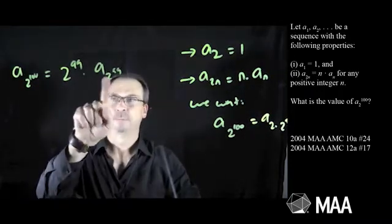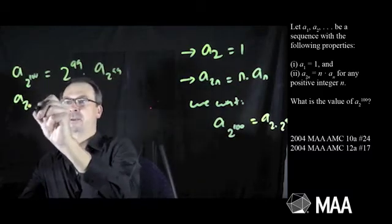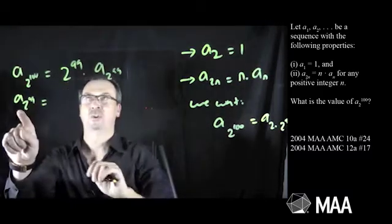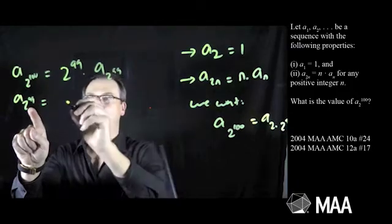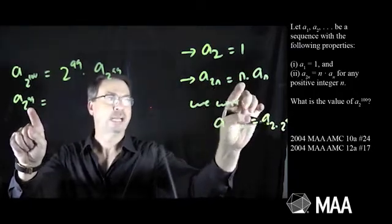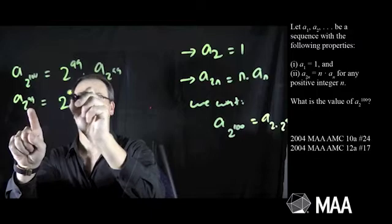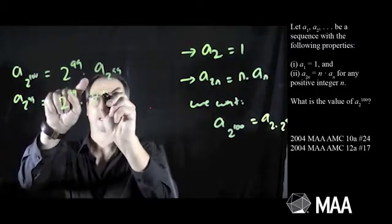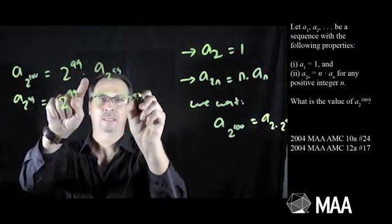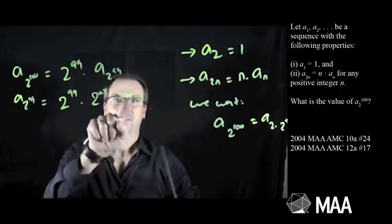Hmm, alright, well now I'm stuck with this one. A₂ to the 99, that is actually 2 times 2 to the 98. So it would be 2 to the 98 times a₂ to the 98. Still got that one to work out.